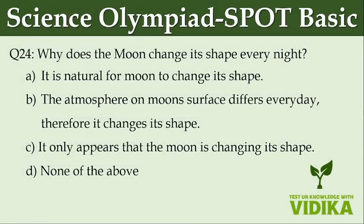Why does the moon change its shape every night? Option A: It is natural for the moon to change its shape. Option B: The atmosphere on the moon surface differs every day, therefore it changes its shape. Option C: It only appears that the moon is changing its shape. Option D: None of the above.